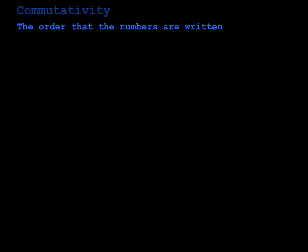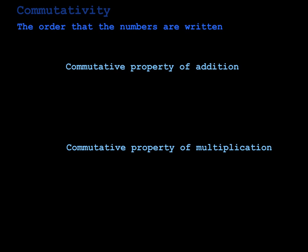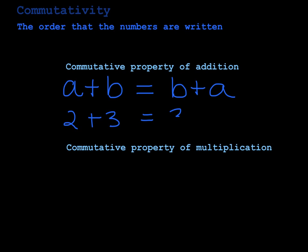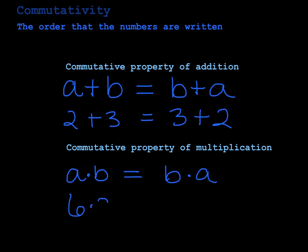Our second property has to do with commutativity, which means the order that the numbers are written. We've got the commutative property of addition and the commutative property of multiplication. The commutative property of addition says that a plus b is exactly the same as b plus a — for example, 2 plus 3 is 5, and 3 plus 2 is still 5. The commutative property of multiplication says a times b is the same as b times a — 6 times 2 is the same as 2 times 6. The order does not matter in addition and multiplication.